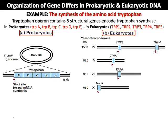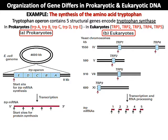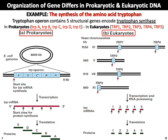In eukaryotes, the tryptophan genes are distributed across different chromosomes: tryptophan 1 and 4 are on chromosome 4, tryptophan 2 is on chromosome 5, tryptophan 5 is on chromosome 7, and tryptophan 3 is on chromosome 11. Each gene has its own start site and its own promoter, which contrasts with prokaryotes where all five genes share only one promoter to initiate transcription. In prokaryotes, one very long messenger RNA is produced with multiple start sites for protein synthesis, while in eukaryotes five separate messenger RNAs are produced. Translation then yields five different proteins that form a complex of tryptophan synthase.